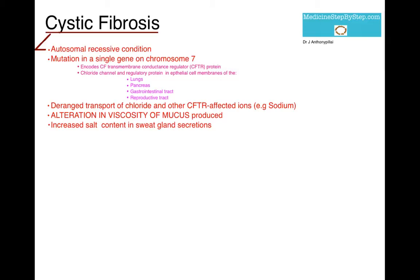As a result, there is a deranged transport of chloride and other ions such as sodium and bicarbonate. As a result of the deranged transport, there is an alteration to the viscosity of the mucus produced at the epithelial surfaces of the lungs, pancreas, gastrointestinal tract, and reproductive tract.